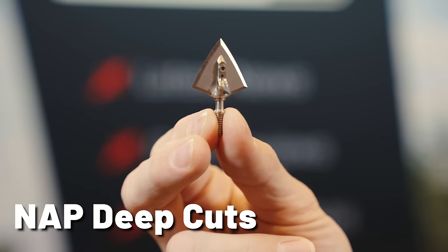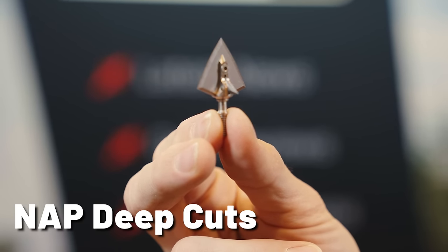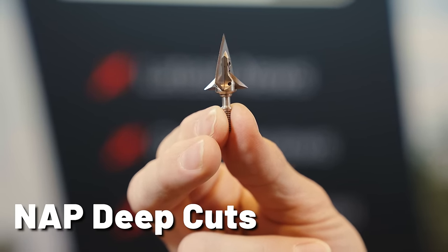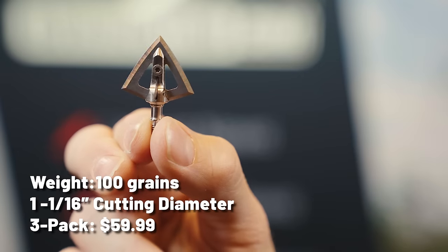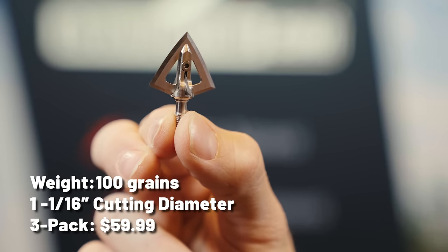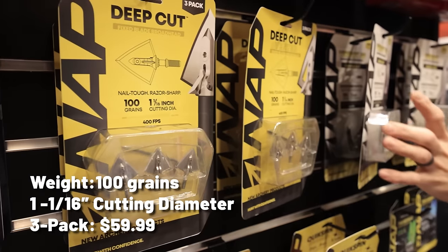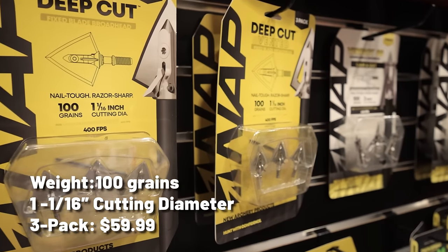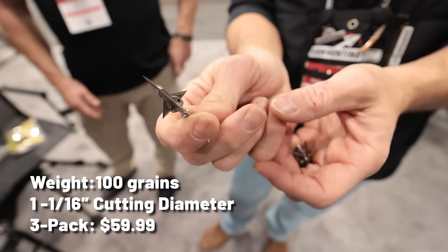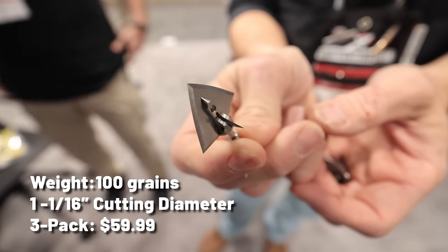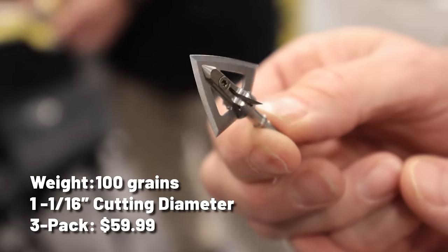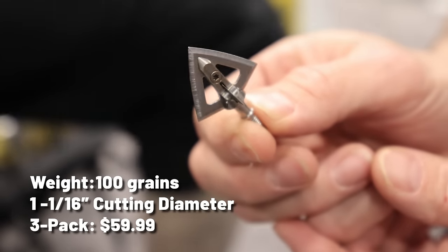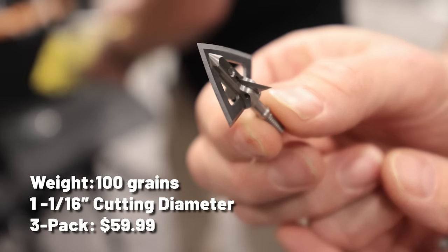NAP Deep Cuts and Verdict. New Archery Products is releasing a few new broadheads in both the fixed blade and mechanical categories this year. The aptly named Deep Cuts broadhead will be available in vented and solid versions. Both feature a solid, one-piece, stainless steel construction with the main blade measuring 39 thousandths thick and providing a 1 and 1 sixteenths cutting diameter. The ultra-sharp bleeders add an additional 3 quarter inch of cutting surface. Both heads are available in 100 grains and will retail at $59.99 for a three-pack.